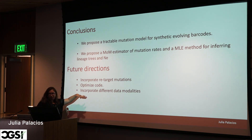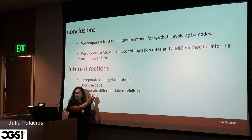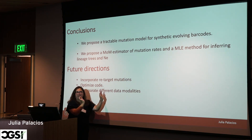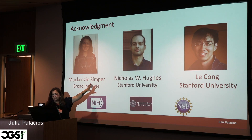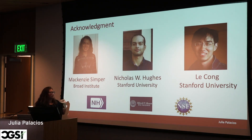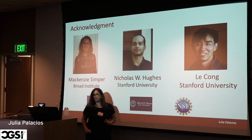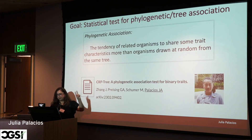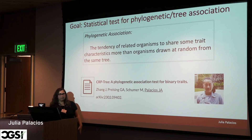The next goal is to use gene expression data: now you have the cell types at the tips, and we want to do hypothesis testing — are the cell types correlated with the phylogenetic tree? Are cells of the same type closer together in the tree? We want to test that hypothesis without making assumptions about how cell types appear in the tree. This work was led mainly by Mackenzie, a postdoc now at the Broad, with Nicholas Hodge and LeCone who develops the Cas12 technology at Stanford.